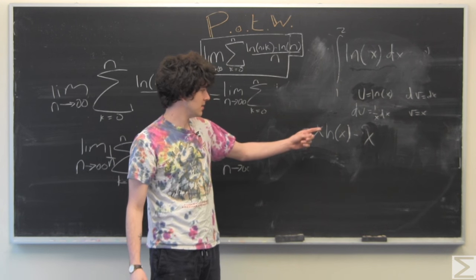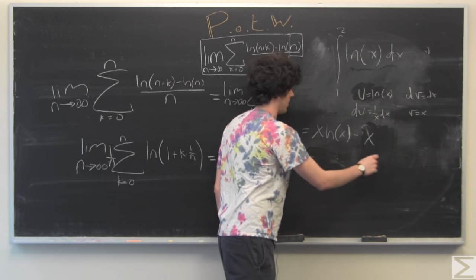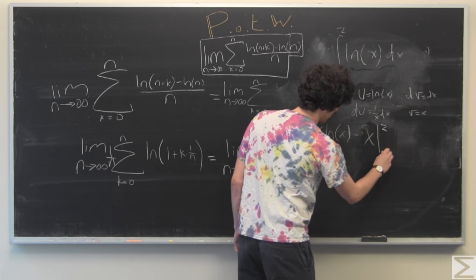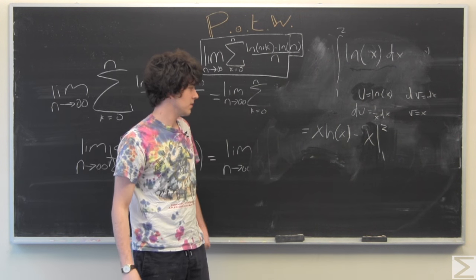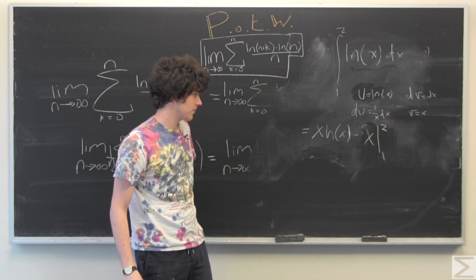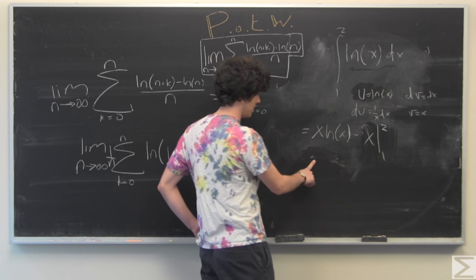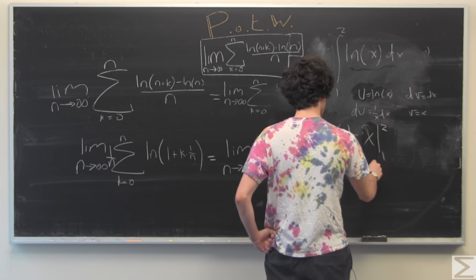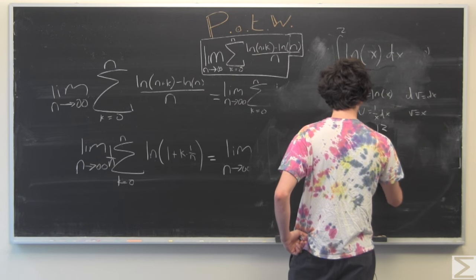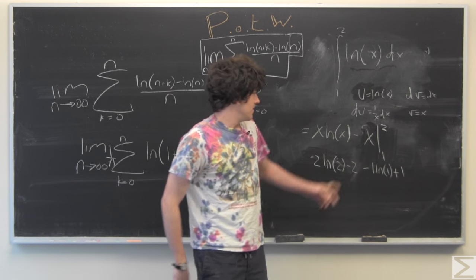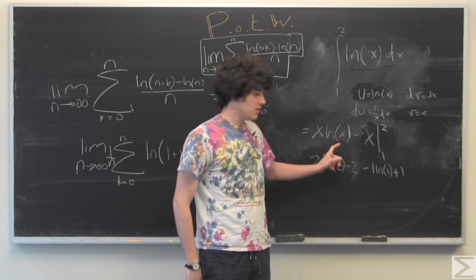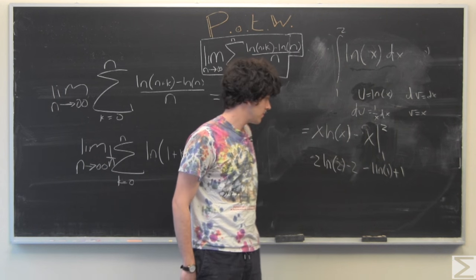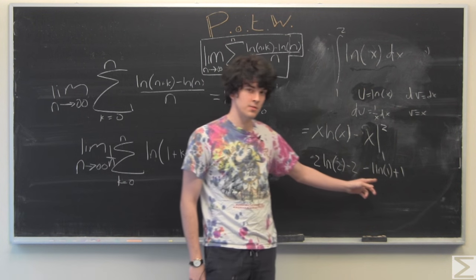So we have x ln x evaluated from 1 to 2. So I'm just going to do this real quick. And this minus becomes plus on the lower bound.